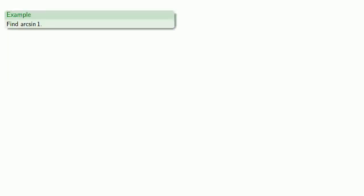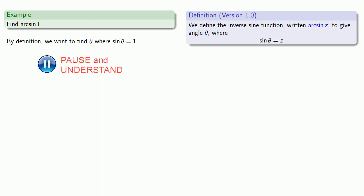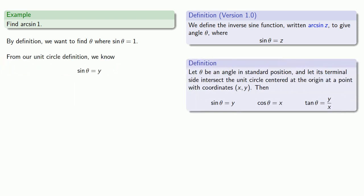Let's try to find the arc sine of 1. Definitions are the whole of mathematics — all else is commentary — so let's pull in our definition, version 1.0. The arc sine of z gives us the angle theta where the sine of theta is equal to z. So by our definition, we want to find theta where the sine of theta is equal to 1. From our unit circle definition, we know that the sine of theta is equal to the y-coordinate. So I want to find the points on the unit circle where y is equal to 1.